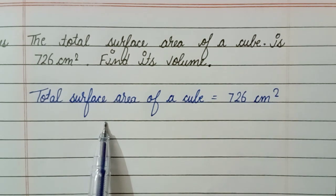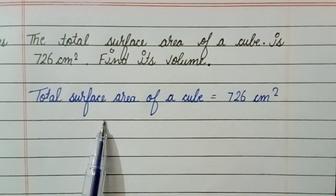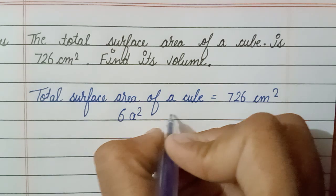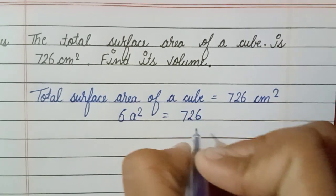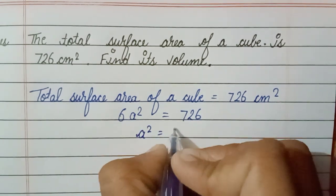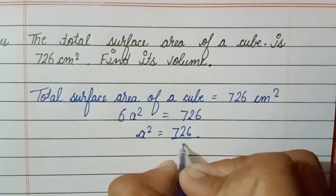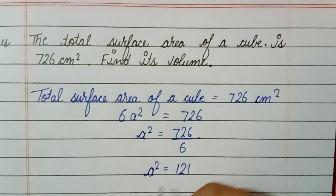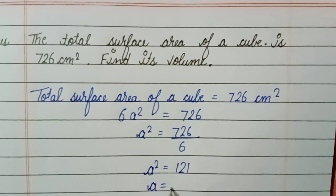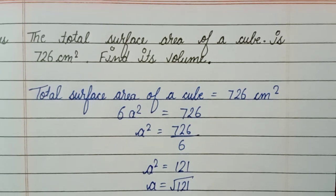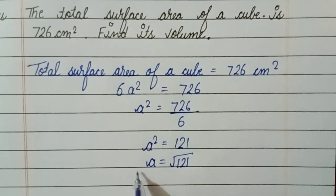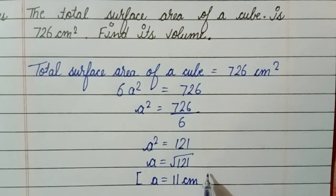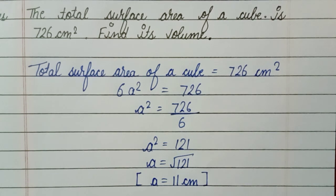With the help of this formula we will find the side of the cube. As we know, the total surface area of a cube is equal to 6a squared. So 726 equals 6a squared, which means a squared is equal to 726 divided by 6, giving us a squared equal to 121. So a equals the square root of 121, which means a is equal to 11 centimeter — this is the side of the cube.